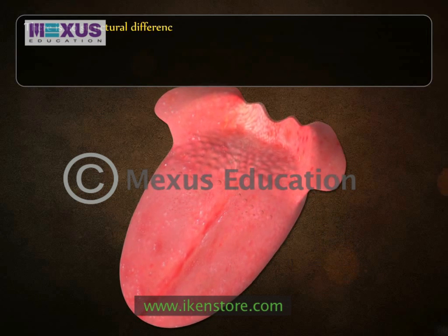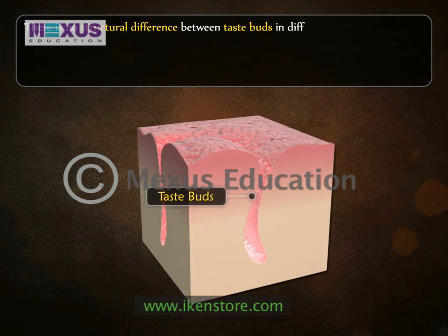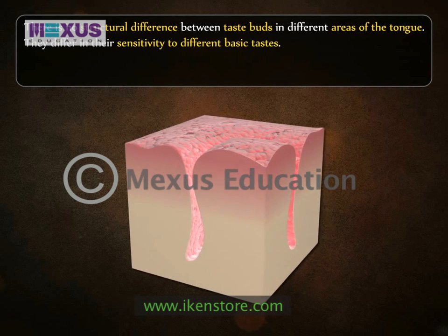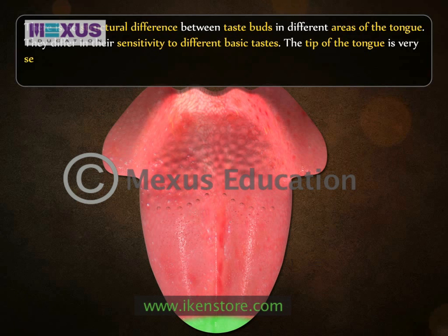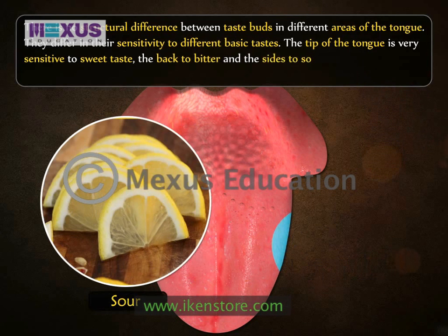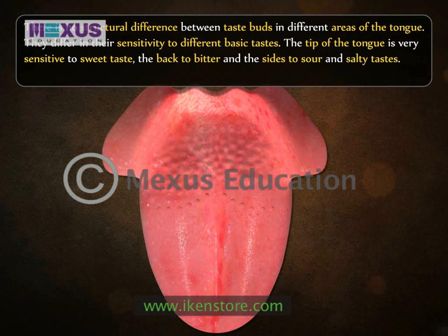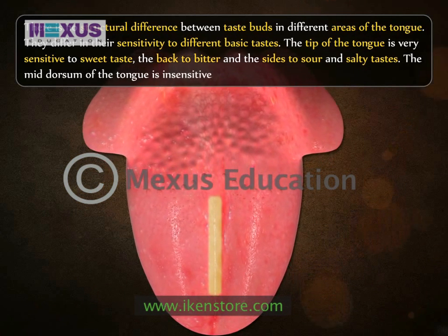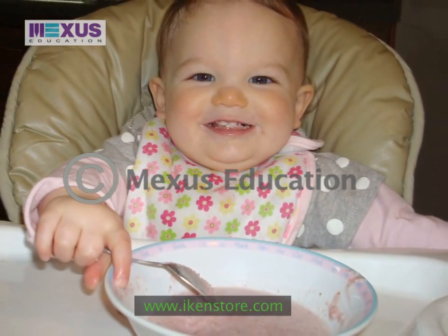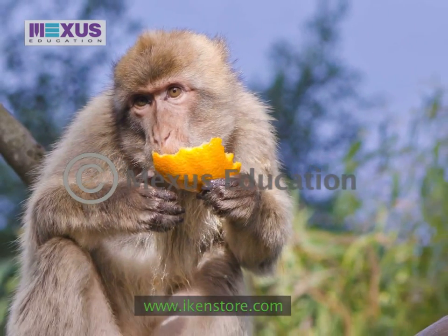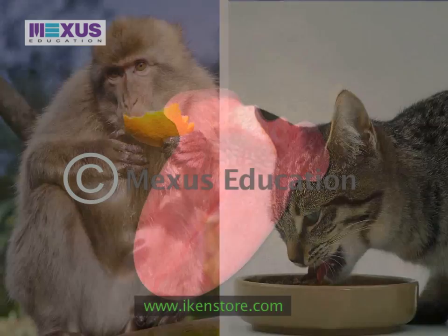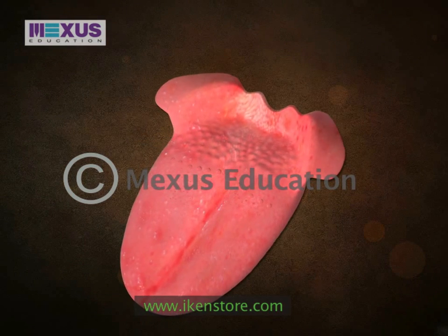There is no structural difference between taste buds in different areas of the tongue; they differ only in sensitivity to different basic tastes. The tip of the tongue is very sensitive to sweet taste, the back to bitter, and the sides to sour and salty tastes. The mid-dorsum of the tongue is insensitive to taste. A baby has many more taste buds than an adult. Some mammals like monkeys and cats also possess taste buds for distilled water. Adaptation of taste sensation is very quick.